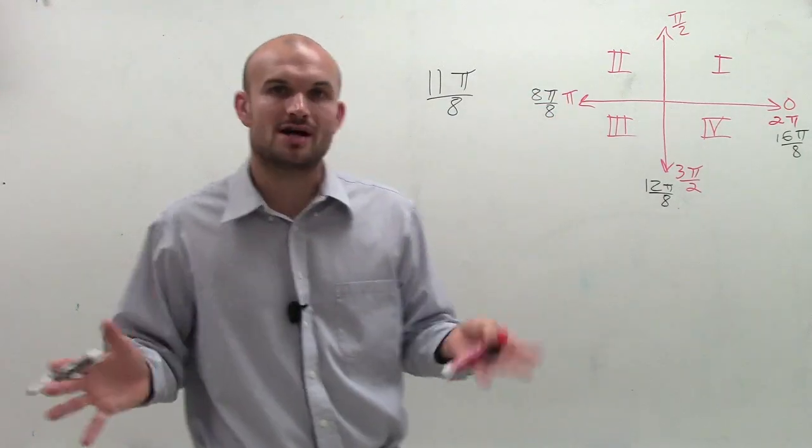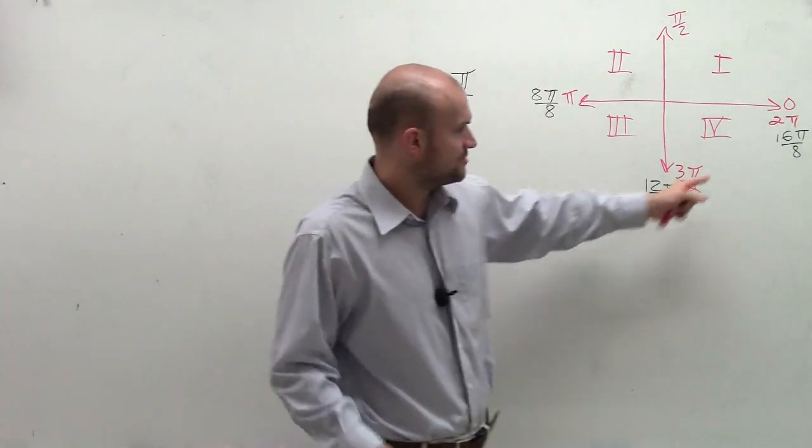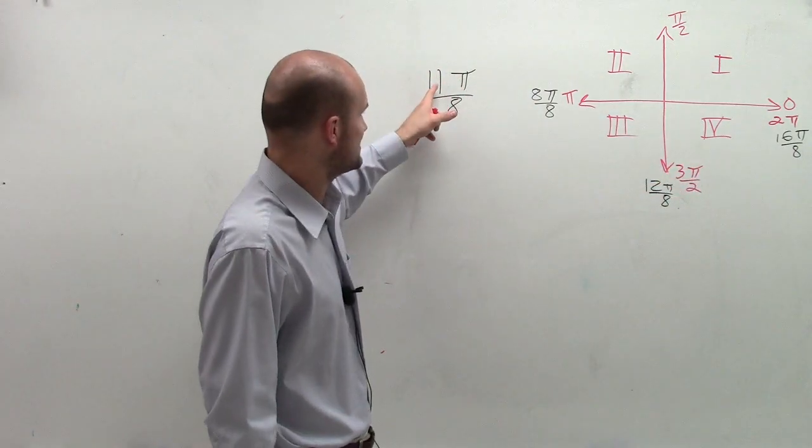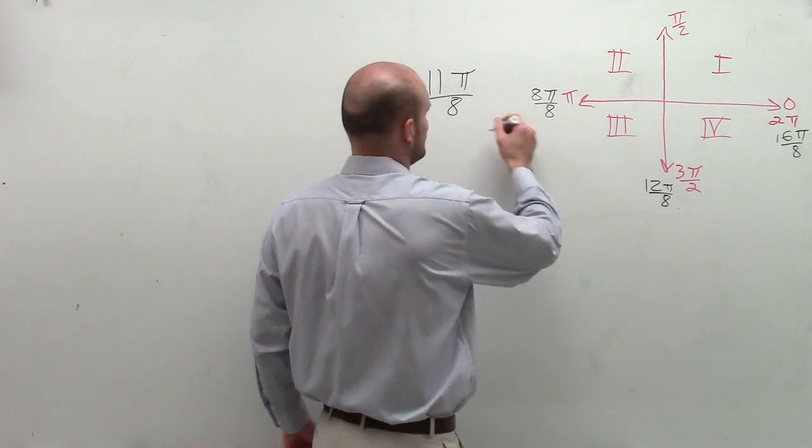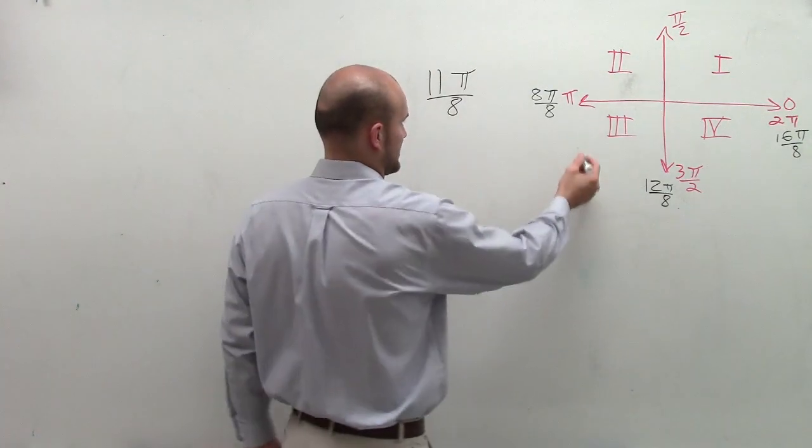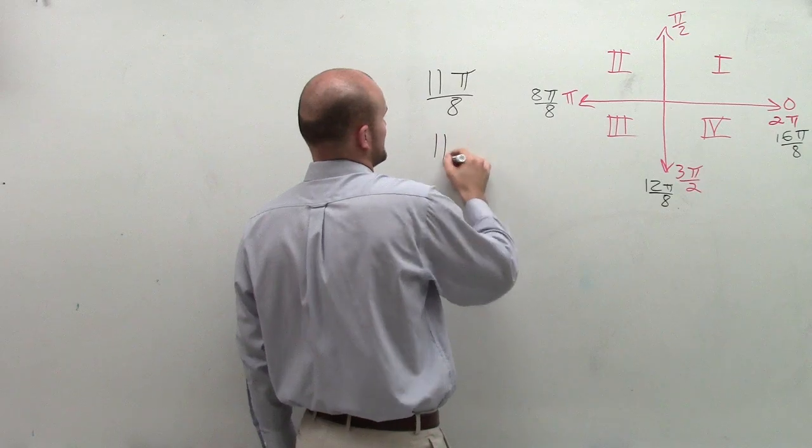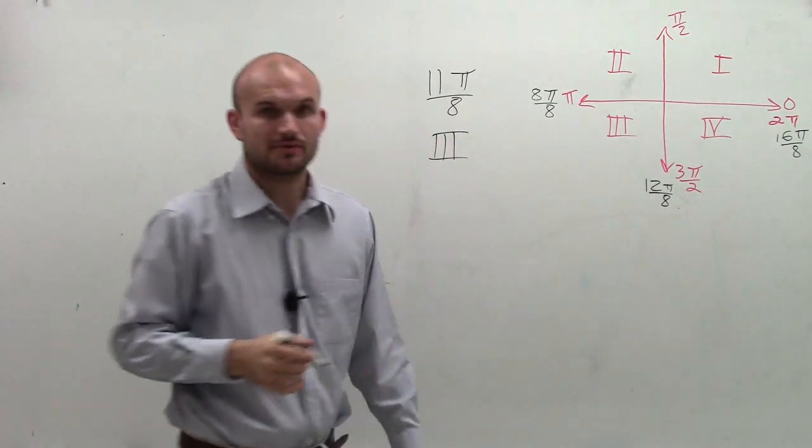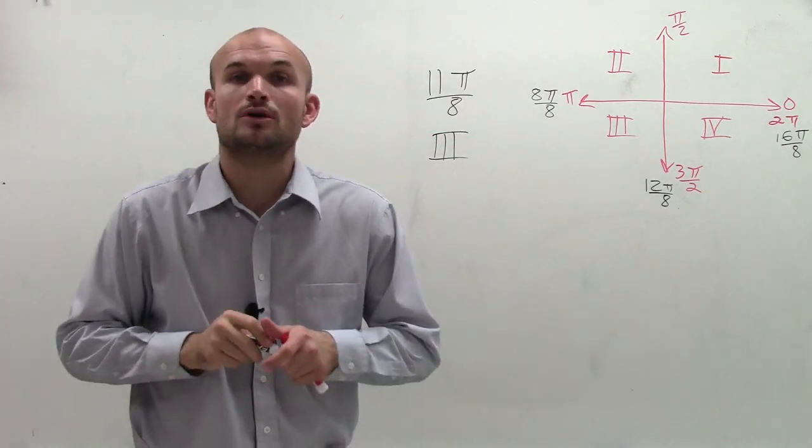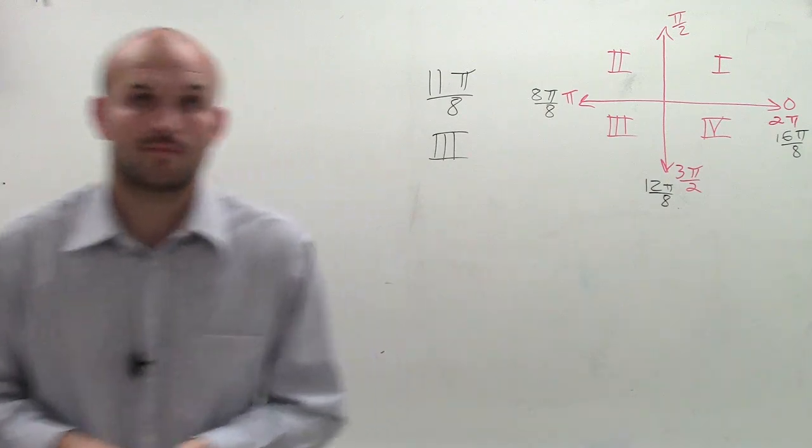So I changed my quadrant angles so I could relate them into my denominator 8. Then I easily see that 11π over 8 is going to be in quadrant 3. So you could say that this answer for here is going to be quadrant 3. So there you go. That's how you determine the quadrant of an angle in standard form. Thanks.